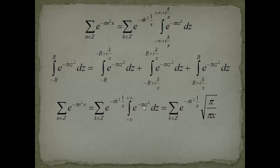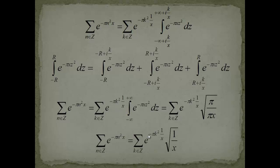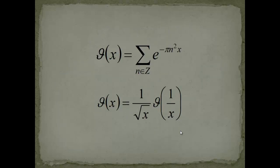We now have e to the minus pi x z-squared dz from minus infinity to infinity. This is the Gauss integral. Calling p equal to pi times x, the integral equals square root of pi over p, which is square root of pi over pi x. The pi cancels, giving 1 over square root of x. So on the left-hand side we have the theta function, on the right we have theta evaluated at 1 over x times 1 over square root of x — exactly the functional equation.